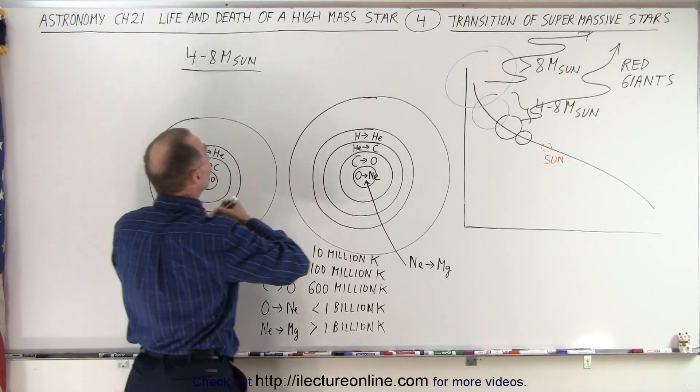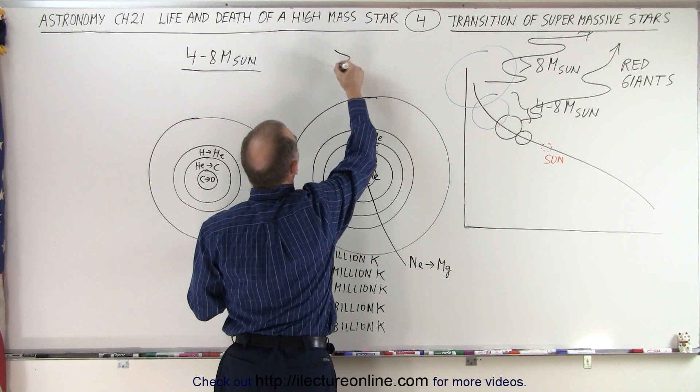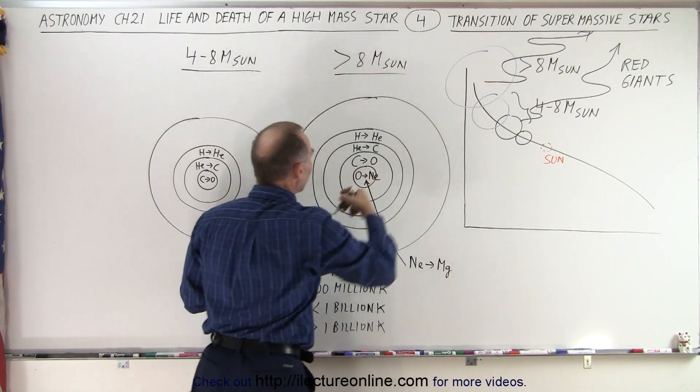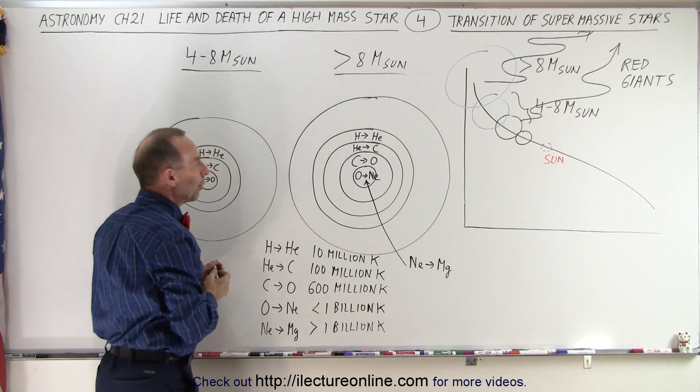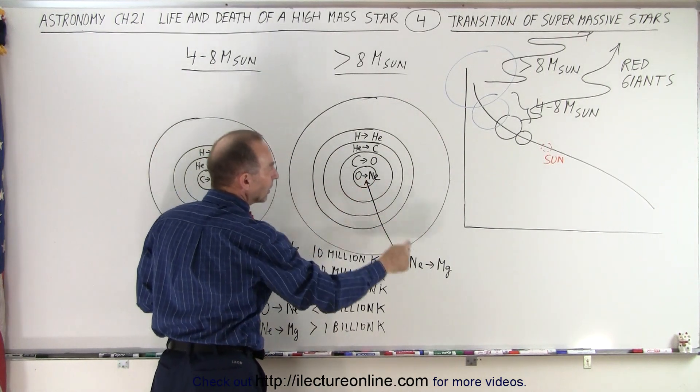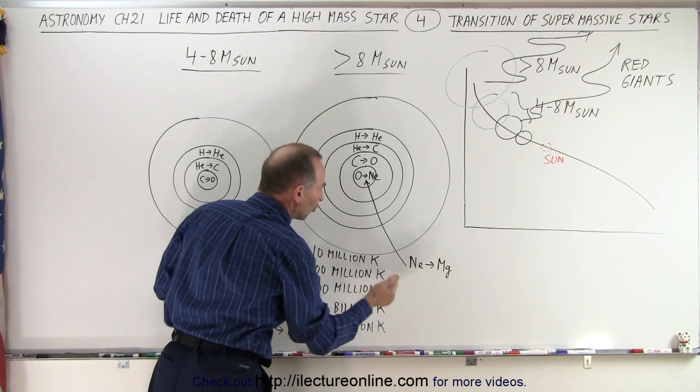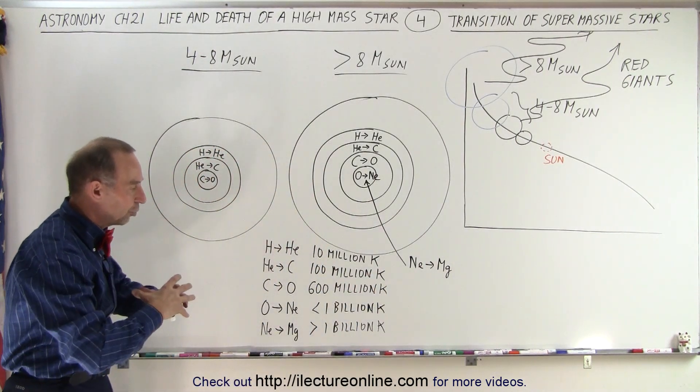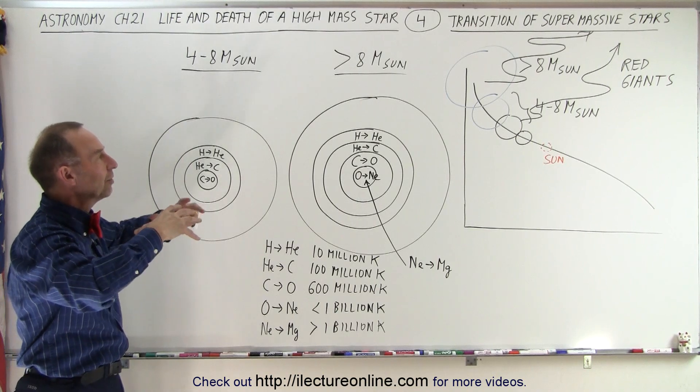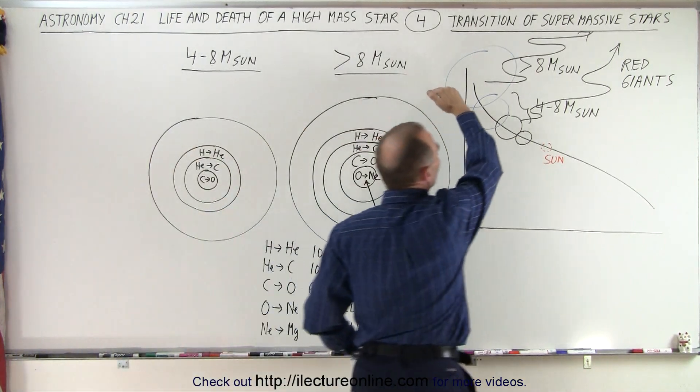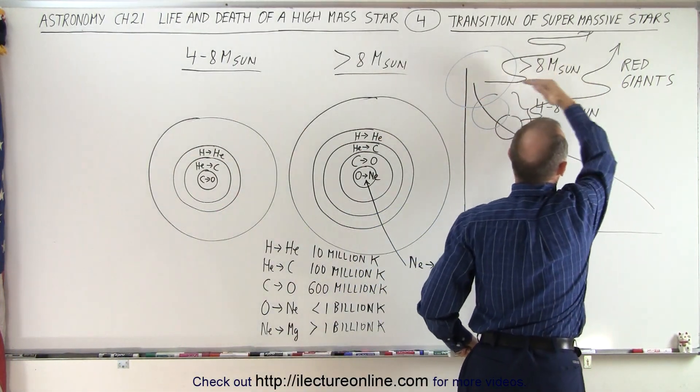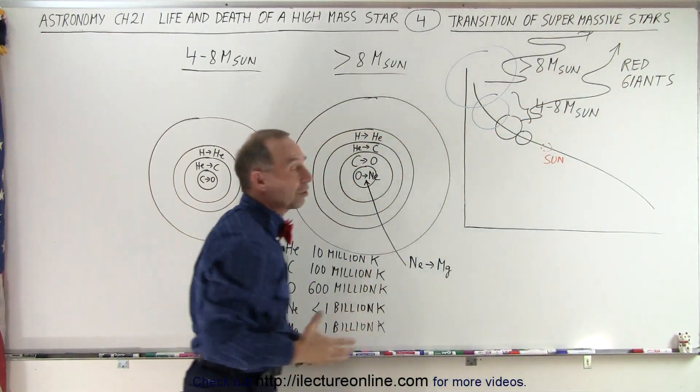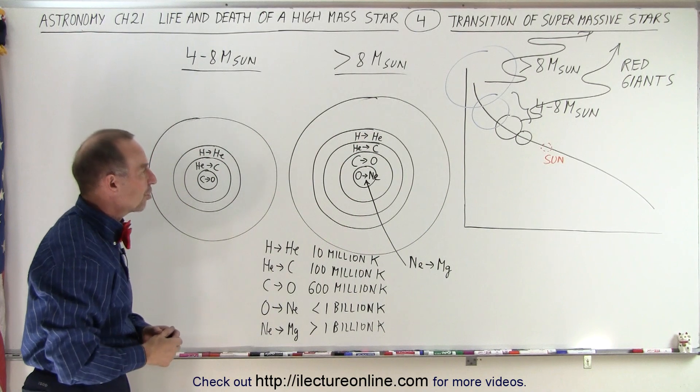By the time you get to stars where the mass is greater than 8 times the mass of the sun, you can see that we even get to the point where oxygen is converted to neon and neon is converted to magnesium with temperatures over 1 billion degrees at the very center of the core. And so the star slowly increases in size and starts moving across the HR diagram until it turns into what we call the red giant branch, where it becomes a supermassive red giant.